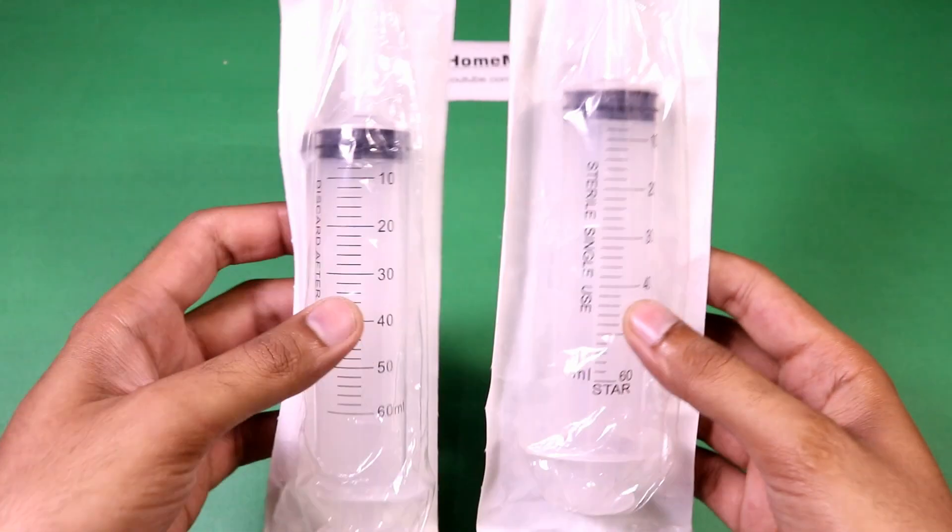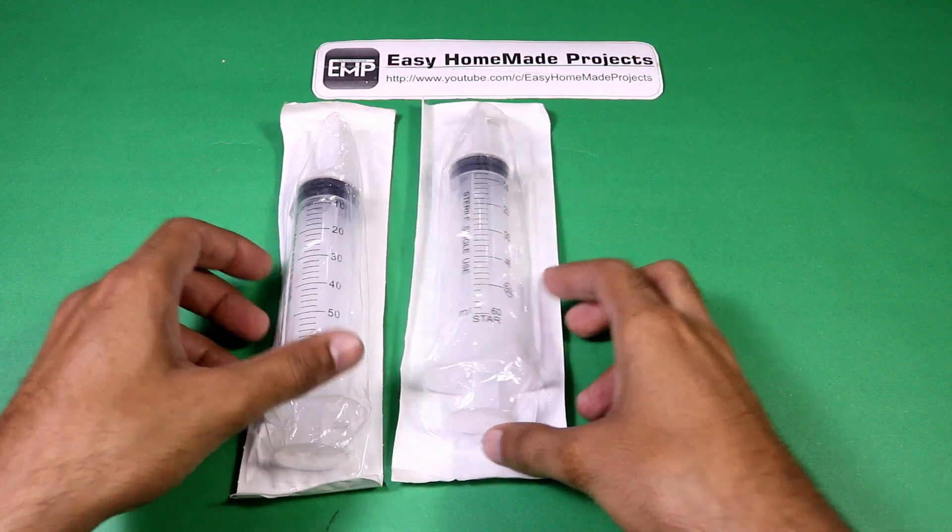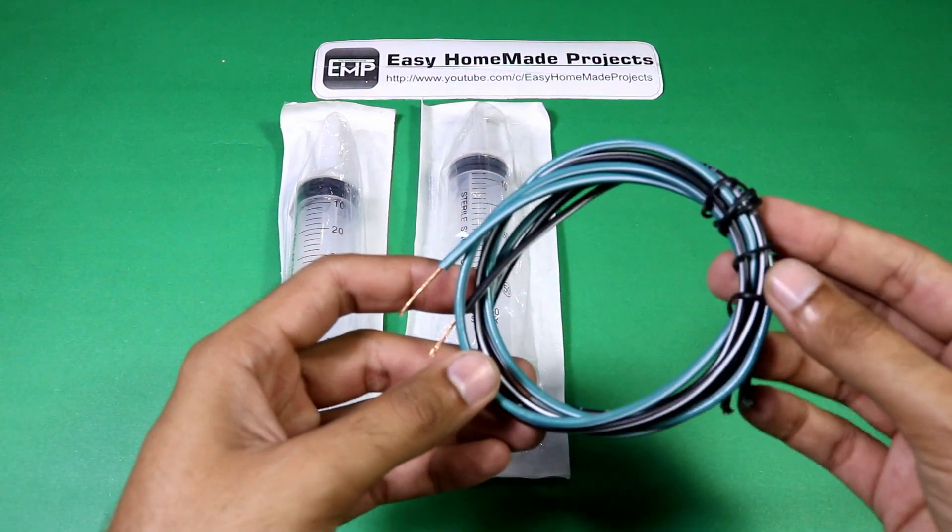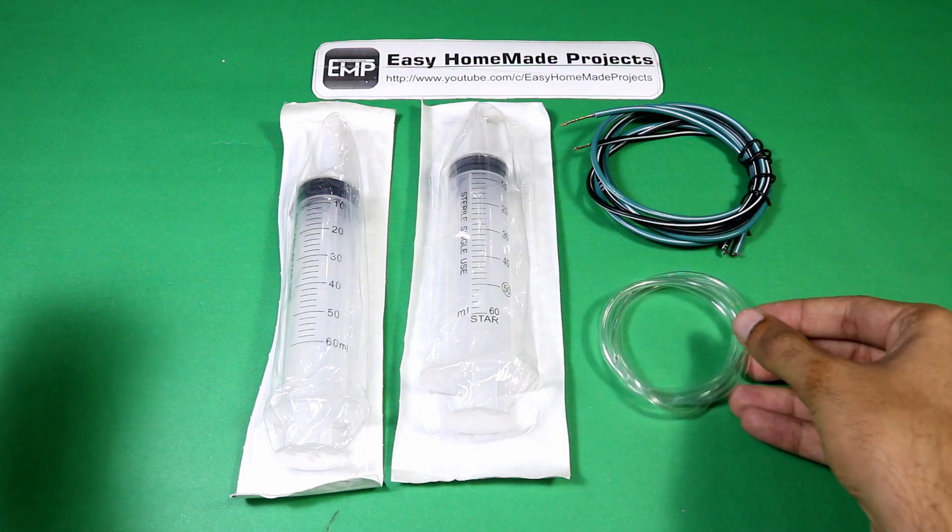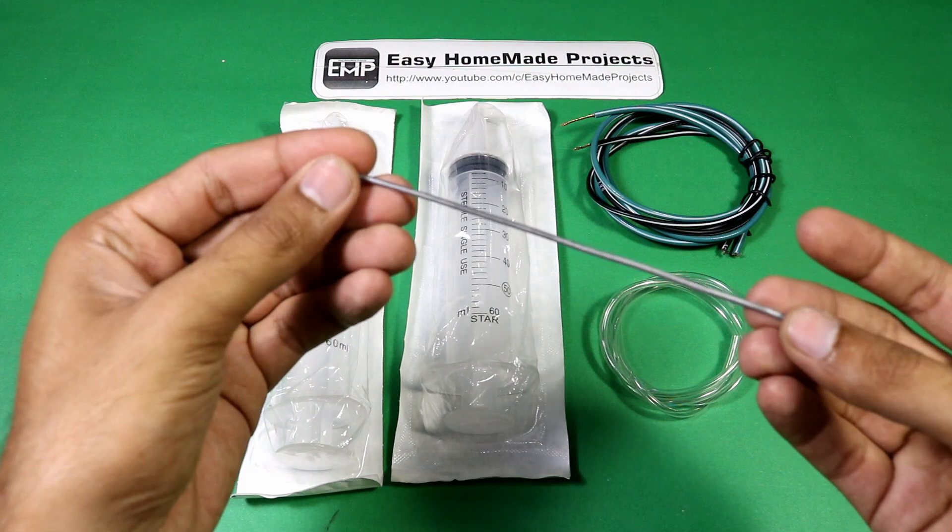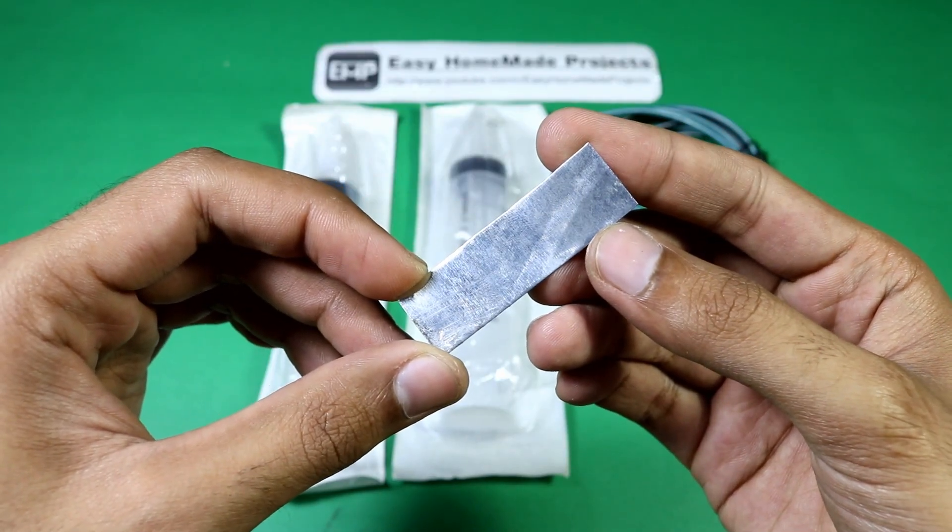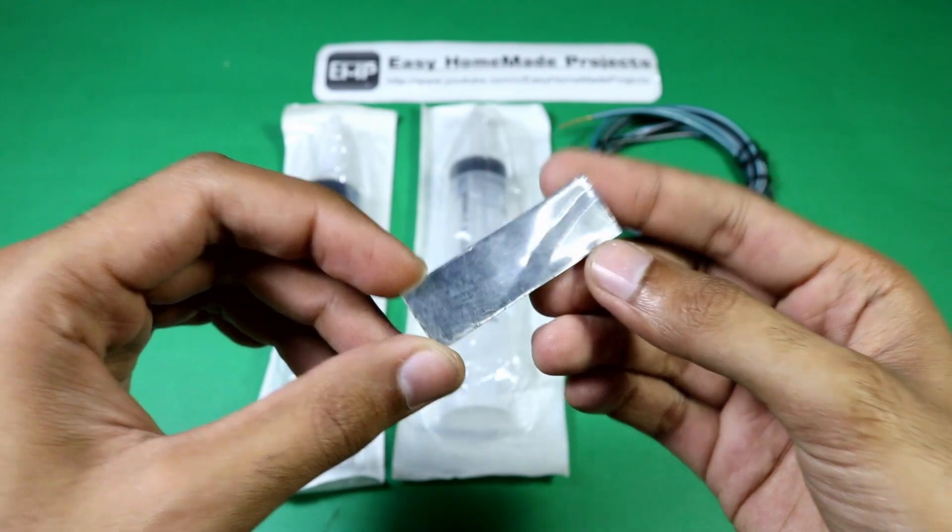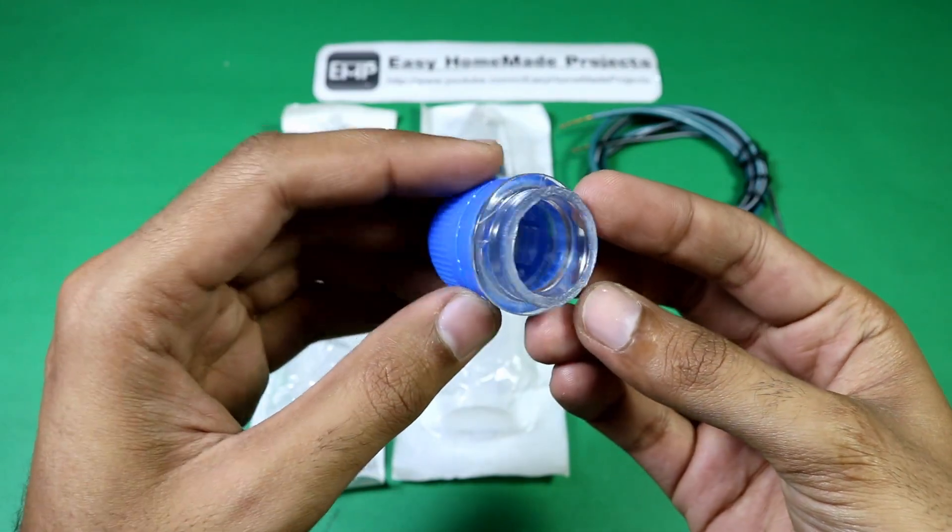For this simple project we will need two medical syringes, some electrical wires, three millimeter plastic tubing six inches long, a piece of steel wire, a two inch by quarter inch piece of metallic sheet, and a soda bottle head with lid.